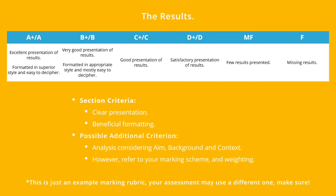Here's an example of a marking rubric for results. From this rubric we can see the criteria as clear presentation and beneficial formatting. I've also added some possible additional criteria which might be in the rubric depending on the weighting. Most of the time results aren't worth much — maybe less than 10 percent — but some weightings can be greater than 20 percent. A greater percentage may cause you to include some of what would normally be your discussion, so that kind of analysis with consideration of background and context might also be required in your results.